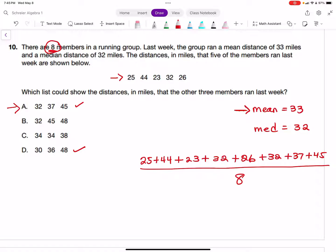But it also has to make the median fact true. The mean is the average, the median is the data value in the middle. I'll have to put these three values and these five values together, put them in order, and see if my median is 32. If it does, then A is the answer.